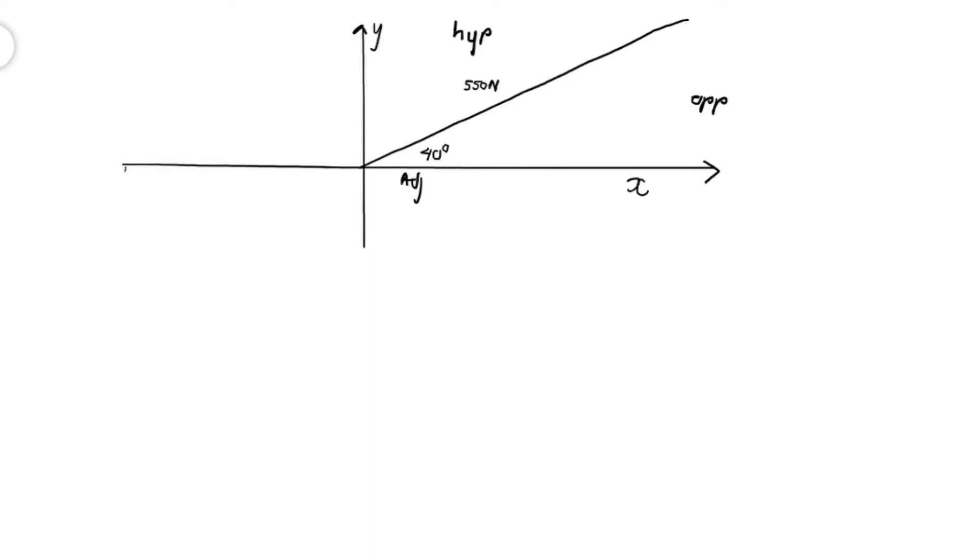Hi there, welcome back. If you look at this Cartesian plane, we have the y and the x-axis, and we also have this angle here which is 40 degrees. We have the hypotenuse which is 550 newtons. We have our opposite and adjacent, so they are unknown. Let's calculate for the unknowns.